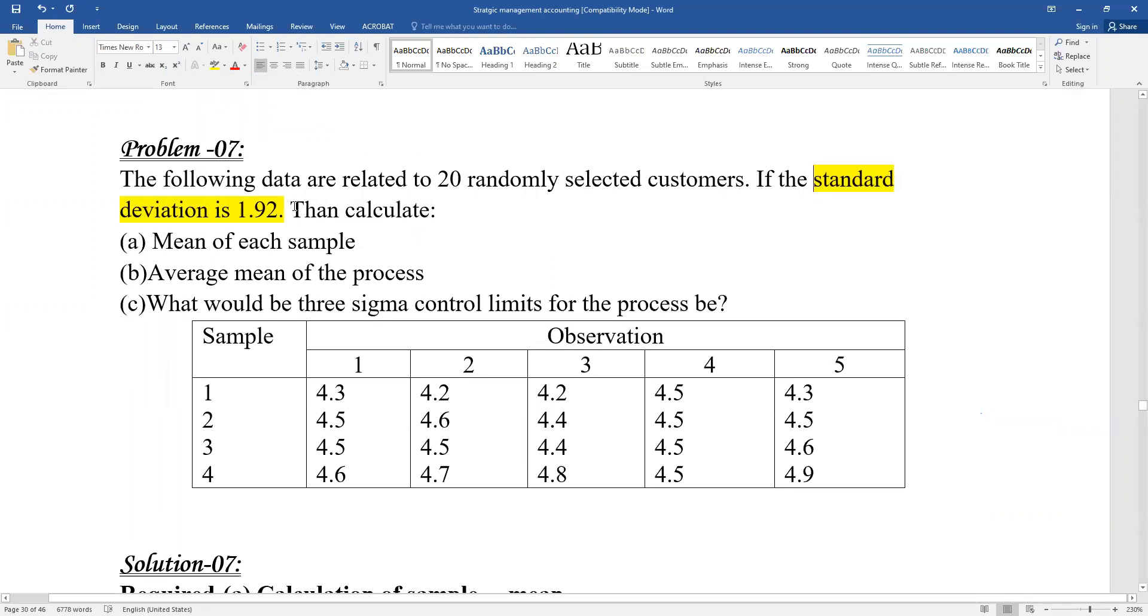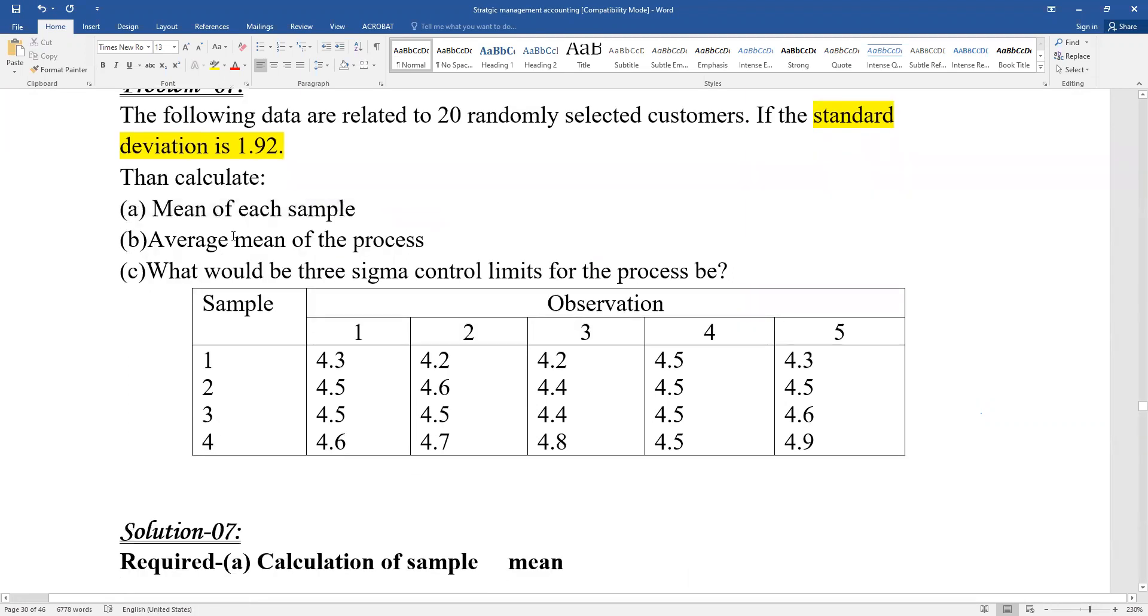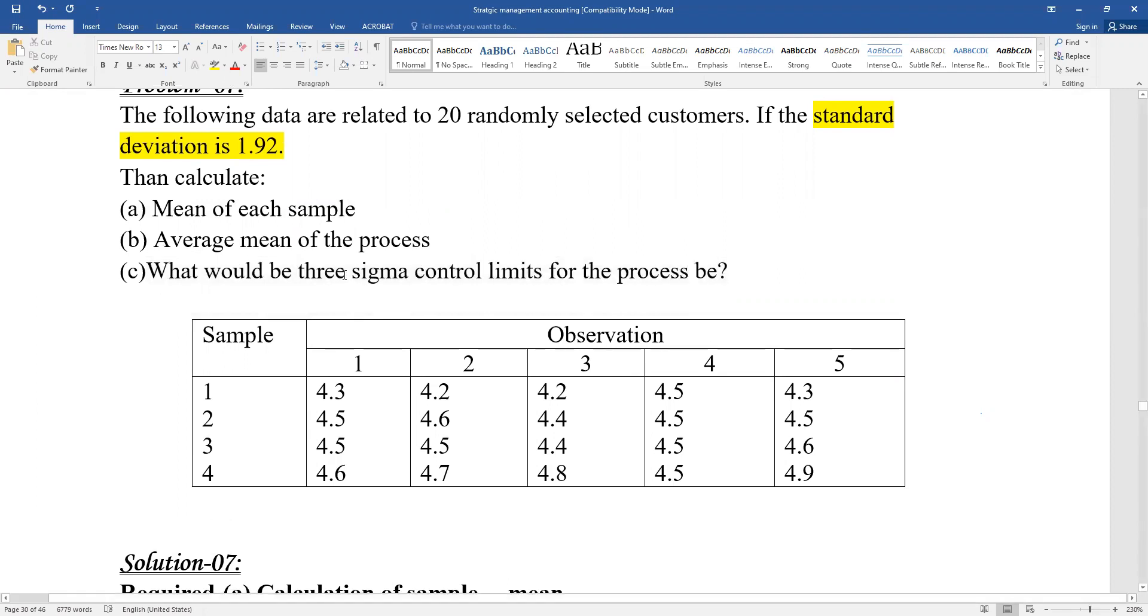Calculate: (a) mean of each sample, (b) average mean of the process, and (c) what would be the three sigma control limits for the process? Control limits - that means upper control limit and lower control limit. Three sigma - I'm talking about three sigma control limits.